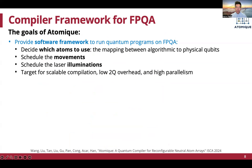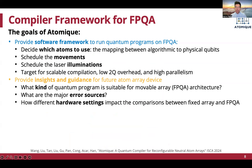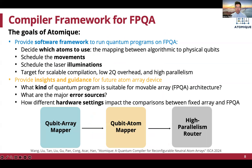In the Atomic compiler, our goal is to provide a software framework to decide which atoms to use, schedule the movements and laser illuminations, and optimize for low two-qubit gate overhead and high parallelism. We also want to provide insights and guidance for future device development by studying what kinds of programs are more suitable given error sources and the impact of different hardware settings. Atomic contains three compilation steps: qubit array mapper, qubit atom mapper, and high parallelism router.